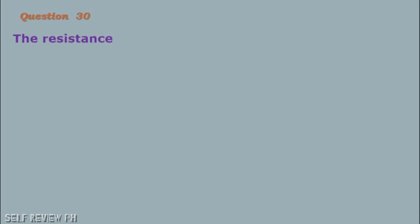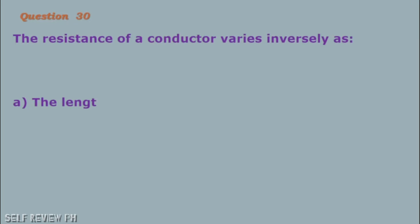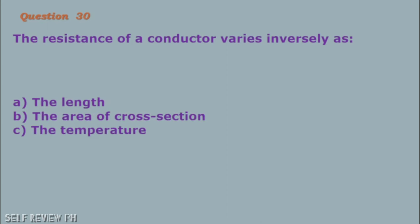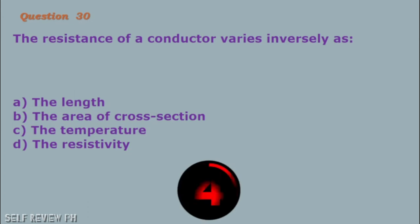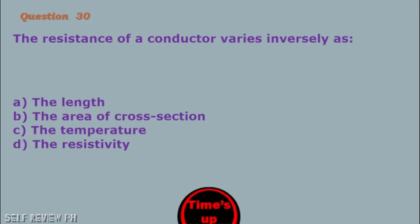Question number 30: The resistance of a conductor varies inversely as: A. The length B. The area of cross-section C. The temperature D. The resistivity. The correct answer is letter B, the area of cross-section.